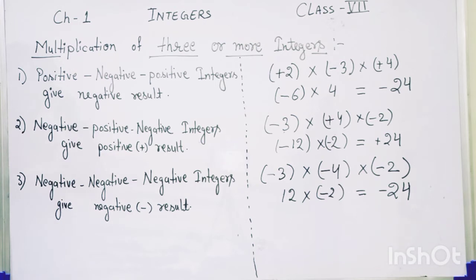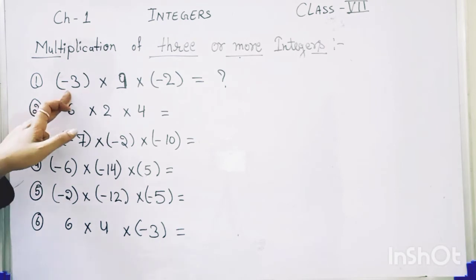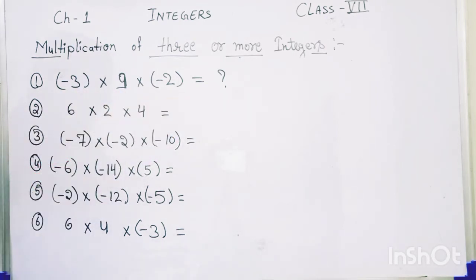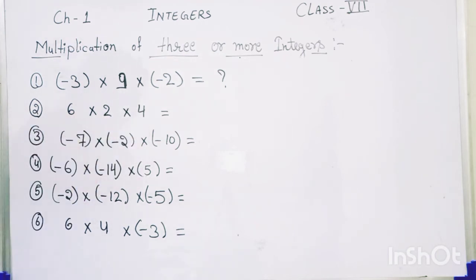Now, according to these rules, I will give you some problems to solve. Let's solve them one by one. The first one is minus three multiplied by nine multiplied by minus two. The second is six multiplied by two multiplied by four.